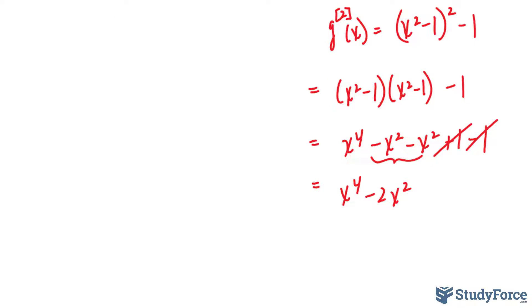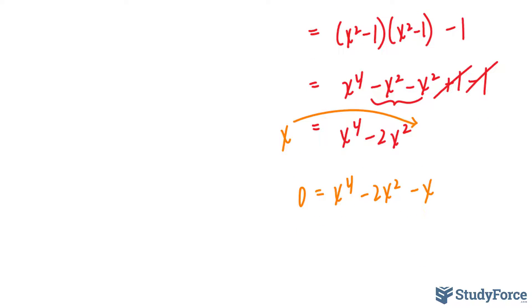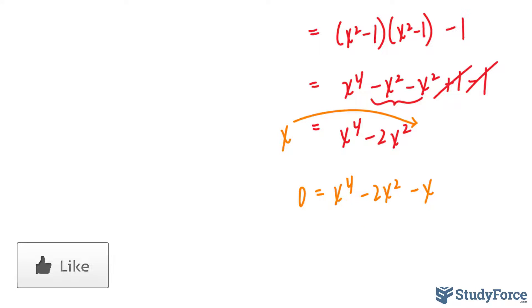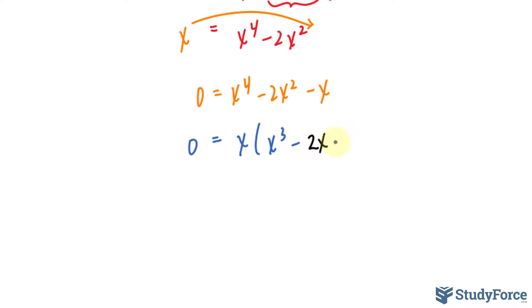We now have the function g composed of g, which equals x to the fourth minus 2x squared. We set this equal to x to find the fixed points of the second iterate. Bringing everything over, we get 0 equals x to the power of 4, minus 2x squared, minus x. Since this is a quartic — a fourth-degree polynomial — it's going to be a little more complicated. Factoring out an x gives x cubed minus 2x minus 1.